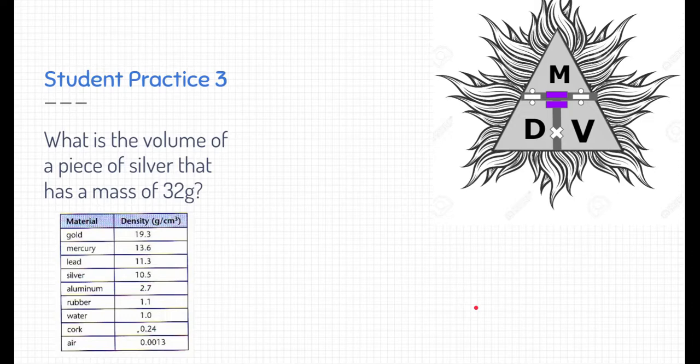What is the volume of a piece of silver that has a mass of 32 grams? Well, in this case, we're not solving for density. We're trying to find the volume of something. So we need to know, in order to find volume, we need to know what the mass and the density is. Again, looking at the triangle, volume is equal to mass divided by density.